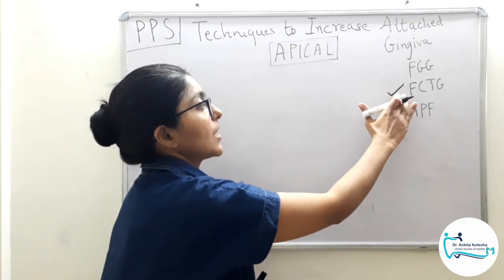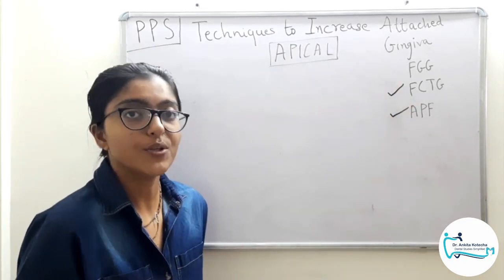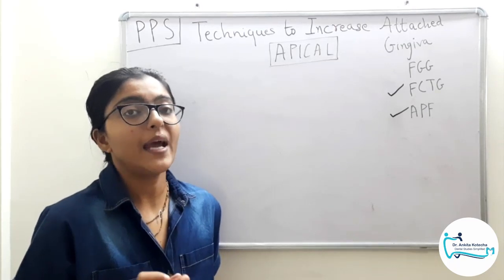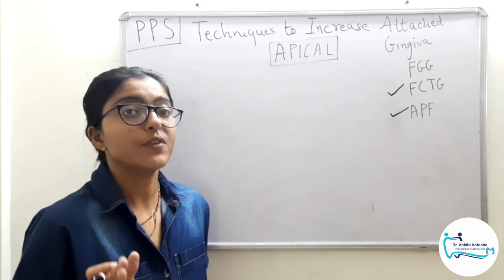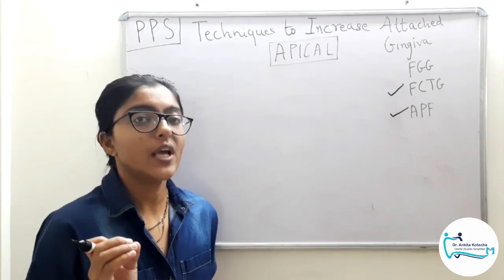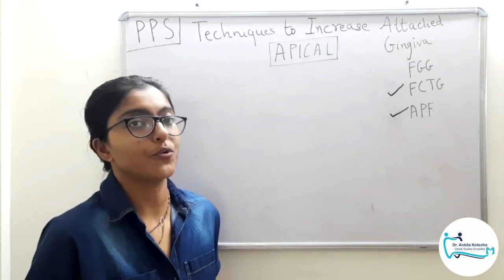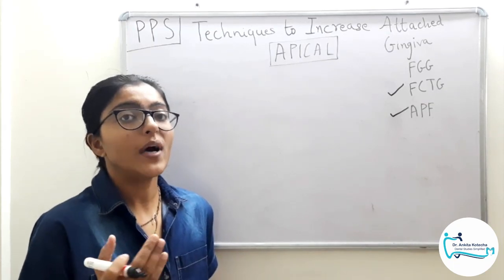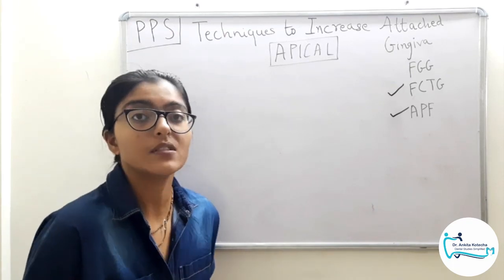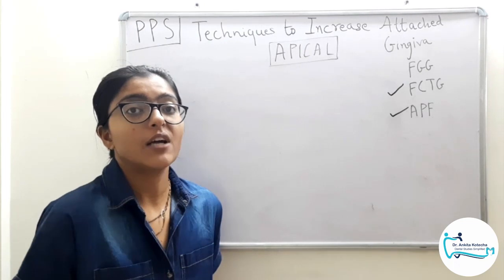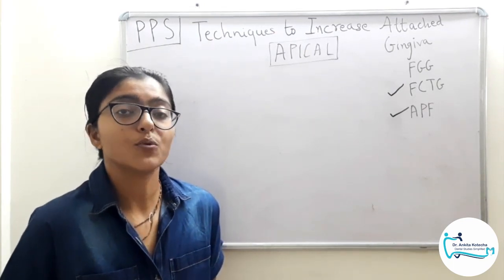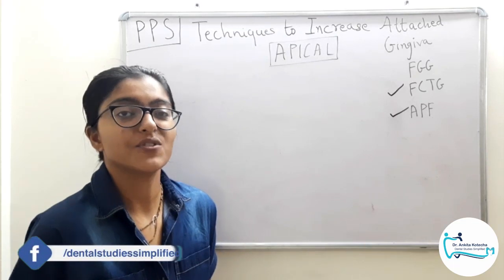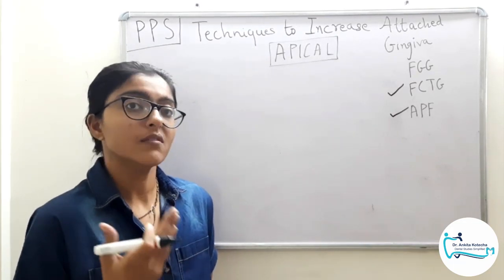The difference between free gingival graft and free connective tissue graft is the type of graft utilized. In free gingival graft we use a gingival graft which has both epithelium and connective tissue, but in free connective tissue graft we use only connective tissue which has epithelium partly attached to it during procurement. Connective tissue graft carries the genetic message which induces the overlying mucosa to differentiate into epithelium, and it provides better aesthetic outcomes — that is why connective tissue grafts are preferred over gingival grafts.